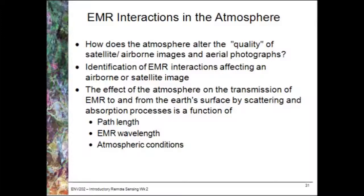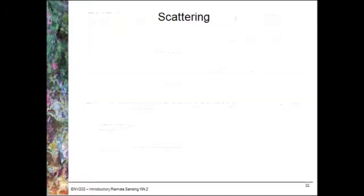This will be a function of the path length — in terms of the difference between the length from the sun to the Earth, so whether the sun is directly overhead or at a low angle. It also depends on the electromagnetic radiation wavelength; for example, blue light is more susceptible to scattering. And individual atmospheric conditions, so particulates in the atmosphere at the time of acquisition, also play a role.